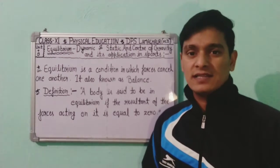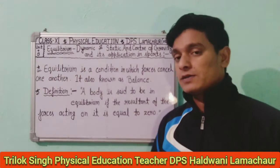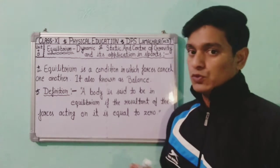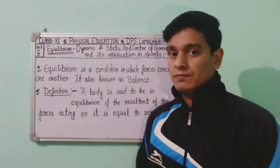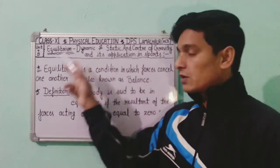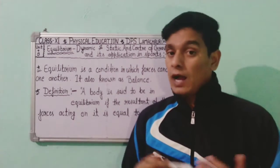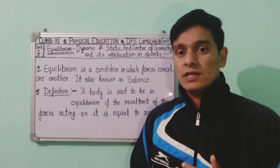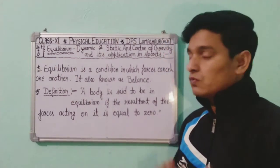Hello everyone, I hope you all are healthy and safe. Dear students, today we are going to discuss Unit 8, Physical Education. Unit 8 is Fundamentals of Anatomy, Physiology and Kinesiology in Sports. In this chapter, today we are going to discuss the last topic, which is Equilibrium. We will know about Dynamic Equilibrium, Static Equilibrium, and also the Center of Gravity and its application in sports.